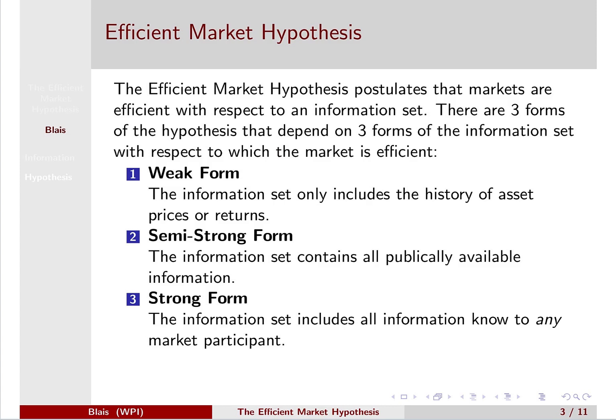The weak form of the efficient market hypothesis is that the market is efficient with respect to the information set that only includes the history of asset prices or asset returns. All the asset price and return histories are available to everyone and are priced into the market. This is considered the weak form because market participants will have other information, and if that information were revealed to the market it would move prices.